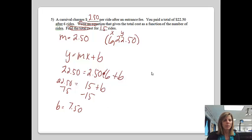And then from here, my equation is going to be y equals m, which was $2.50x, plus the b value, which is $7.50. And then from here, it asks, so it asks me for an equation. I have my equation now. And then it says to find the total cost for 15 rides. Well, I know that x is standing for the number of rides.